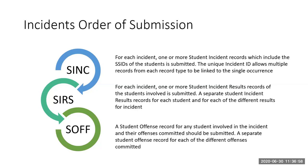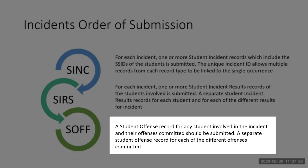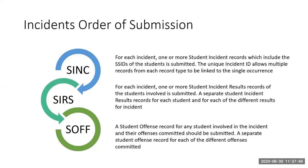Each result requires a SIRS record, so if a student has multiple results — a suspension and an in-school suspension — that student will have two SIRS records. Or if they served a suspension prior to an expulsion, they would have two SIRS records. Even if there was no action, you submit a SIRS record saying no action. So every record should have a SYNC and a SIRS. The third file submitted is the Student Offense — we call that the SOF. A Student Offense Record is required if the student commits the offense, but not every incident has an offense. This is an optional record type.